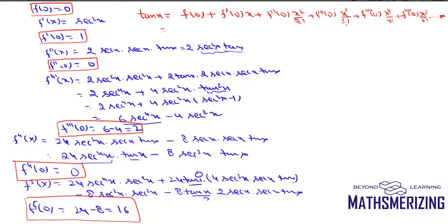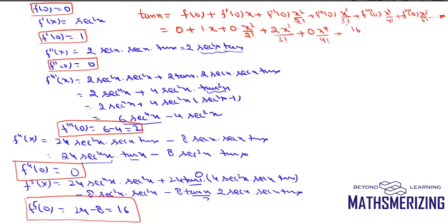Now substituting the values: f(0) = 0, f'(0) = 1 gives x, f''(0) = 0 so that term vanishes, f'''(0) = 2 gives 2x³/3!, f⁴(0) = 0 so that term vanishes, and f⁵(0) = 16 gives 16x⁵/5!, with the series continuing to infinite.